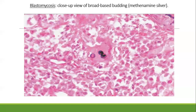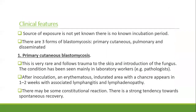On methenamine silver stain, the cell wall is stained and fungal yeast are more obvious. There are three forms of blastomycosis: primary cutaneous, pulmonary, and disseminated. Primary cutaneous blastomycosis is very rare, following trauma to the skin and introduction of the fungus, mainly seen in laboratory workers like pathologists. After inoculation, an erythematous indurated area with a chancre appears in one to two weeks, associated with lymphangitis and lymphadenopathy.